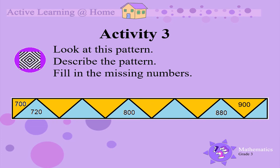Can you see that you should add 20 to 700 to get to 720? And that you should add 20 to 880 to get to 900? Therefore, we can say that in this pattern, the numbers increase in 20's.